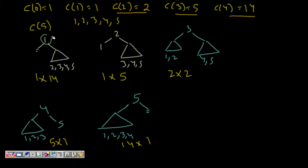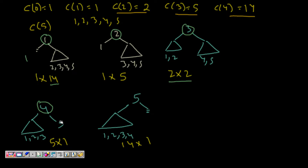For n=5 with elements 1, 2, 3, 4, 5: if 1 is the root, left has nothing (1 way) and right has 4 elements (14 ways), giving 1×14=14. If 2 is the root, left has 1 element and right has 3 elements: 1×5=5. If 3 is the root, left has 2 elements and right has 2 elements: 2×2=4. If 4 is the root, left has 3 elements and right has 1: 5×1=5. If 5 is the root, left has 4 elements and right is null: 14×1=14. Summing these gives the total count — it's a summation of all those products.